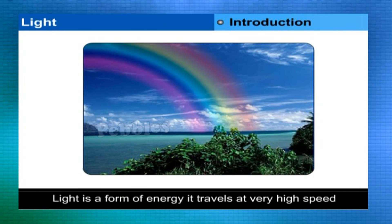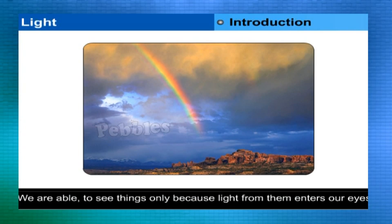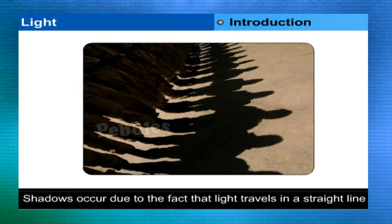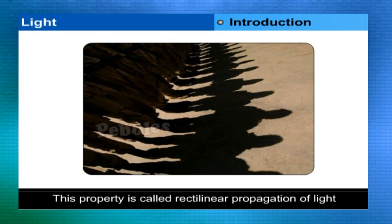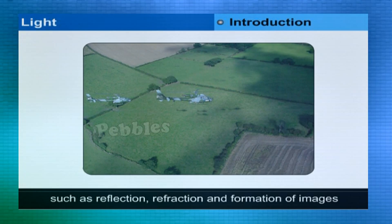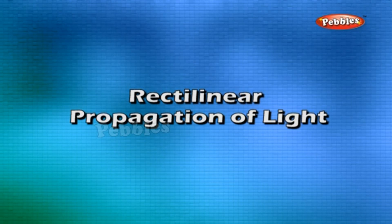Light is a form of energy. It travels at a very high speed, and we are able to see things only because light from them enters our eyes. Shadows occur due to the fact that light travels in a straight line — this property is called rectilinear propagation of light. Light also exhibits typical phenomena of wave motion such as reflection, refraction, and formation of images.